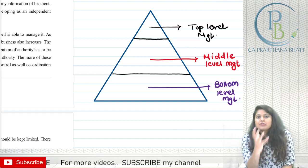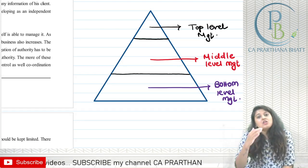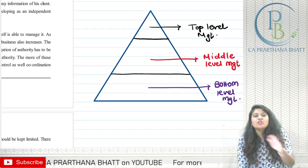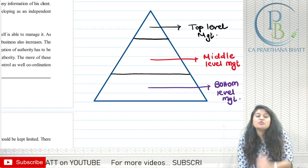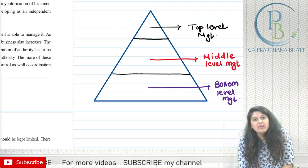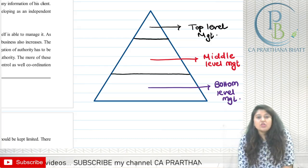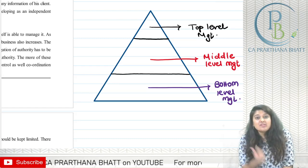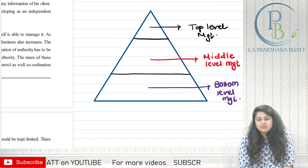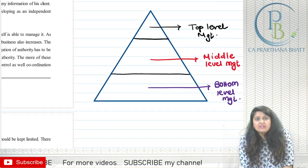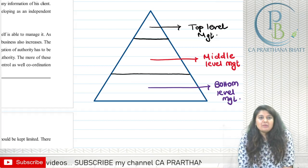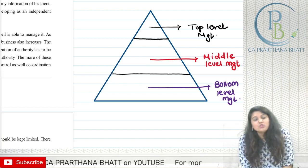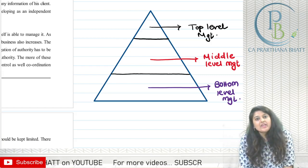Bottom level management consists of people working under middle level management in departments like production. It is important to clarify that bottom level management does not mean factory laborers — that is a wrong concept. Even supervisors who are supervising the production process come into bottom level management.